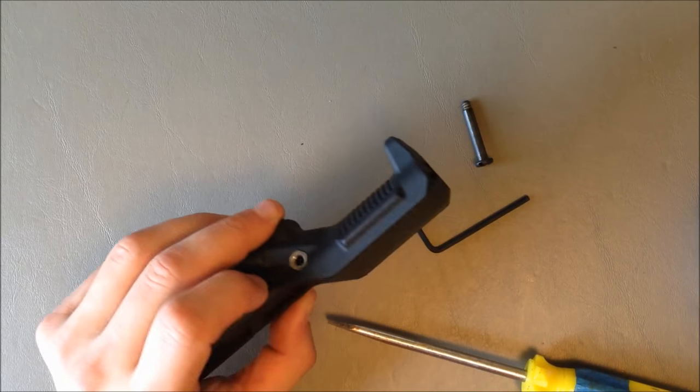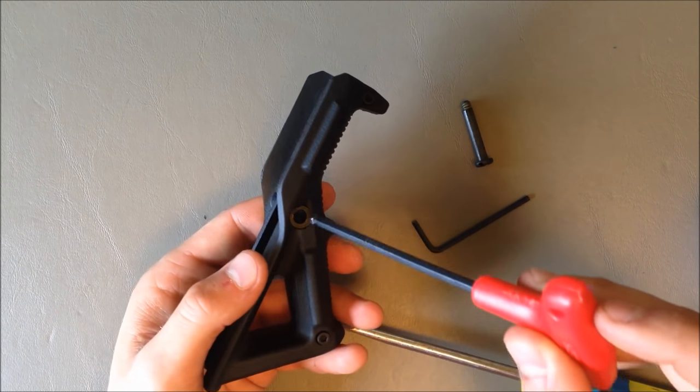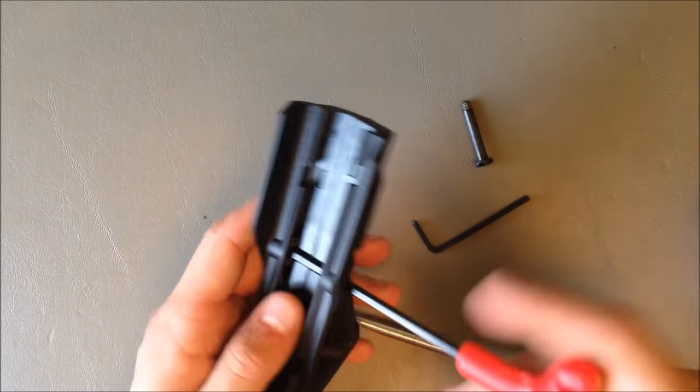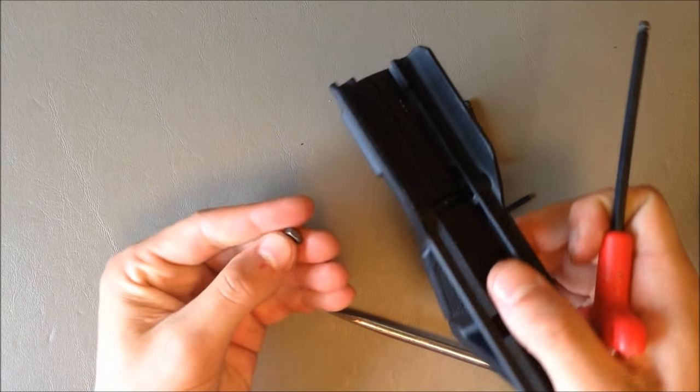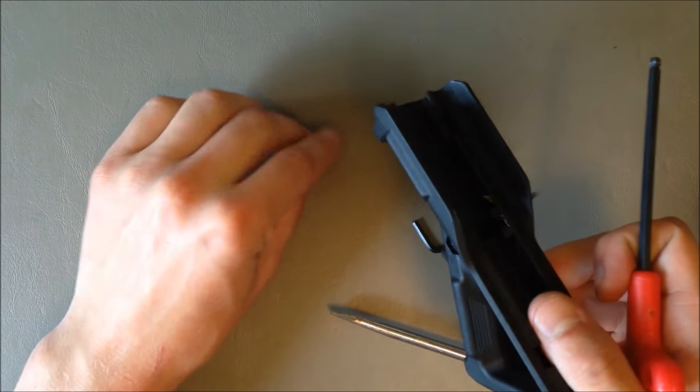Sometimes this nut gets stuck in there on the other side. An easy way to poke it out is just to take an Allen wrench, this is a 5.32, and poke it out from the other side. It's really easy on it and doesn't scratch anything up that way.